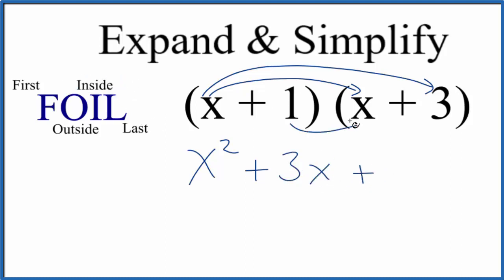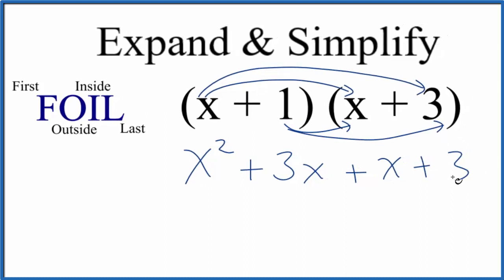Next, we do inside. 1 times x, that's just x. It's 1x, we could just write x. And then the last term, 1 times that 3, that gives us 3.